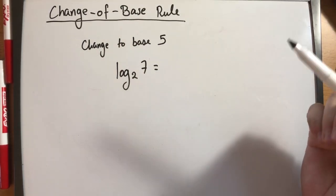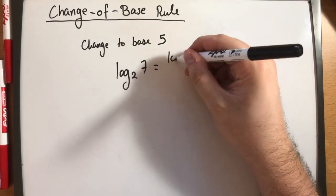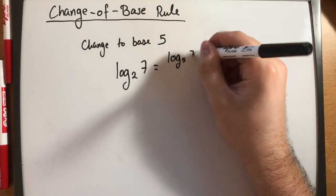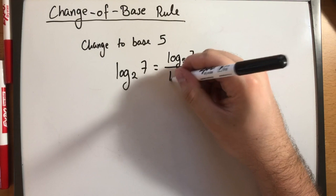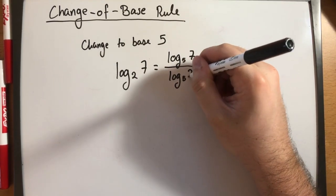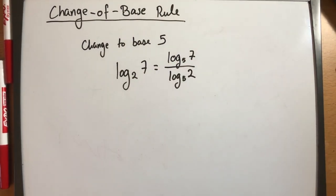So if I use the change of base rule I would say that this is log base 5 of 7 divided by log base 5 of 2, of the old base.